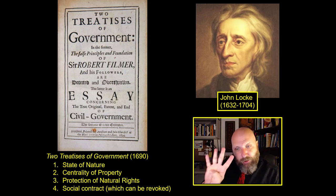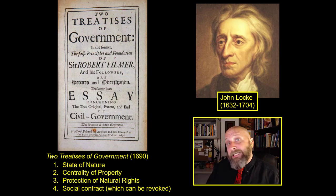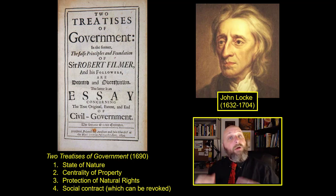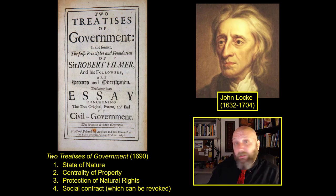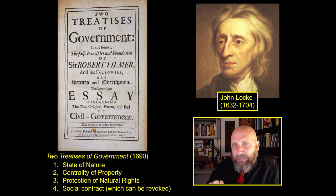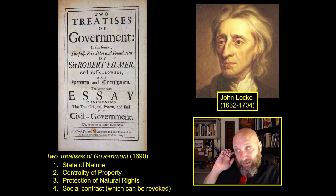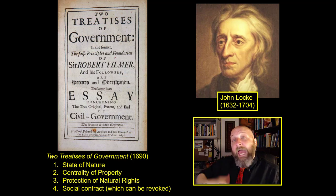All of this hinges on Locke's fourth point: a social contract develops between the government and the people. The government says we are here to protect the rights that God has given you — to make sure nobody can deprive you of life, liberty, or property. And the people agree to support the government. However, if a government is unable to protect your natural rights, then that social contract can be revoked. People can say the government is no longer protecting life, liberty, and property, and therefore we must dissolve the social contract and create a new one.